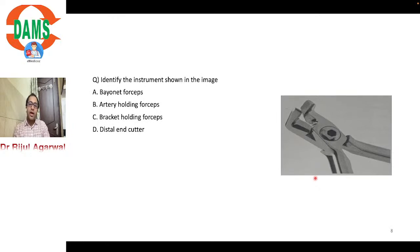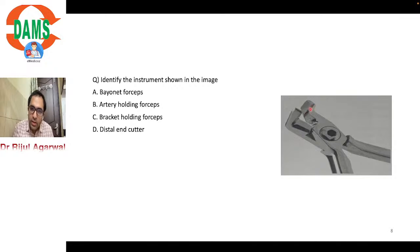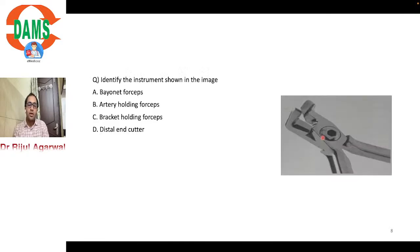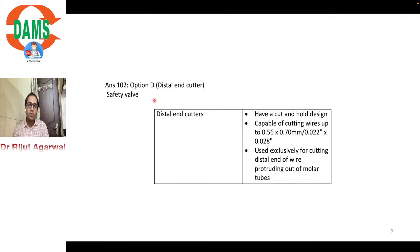Next question: identify the type of instrument shown in the image. If you know it, the answer is a distal cutter. The identifying feature is a groove, which is a safety valve mechanism that prevents the wire from pinching the gingiva when cutting the distal end. The distal cutter can cut wire up to 0.022 x 0.028 inch and is used exclusively for cutting the protruding distal end of the wire. Other options — bayonet forceps, artery holding forceps, and bracket holding forceps — are clearly different instruments.